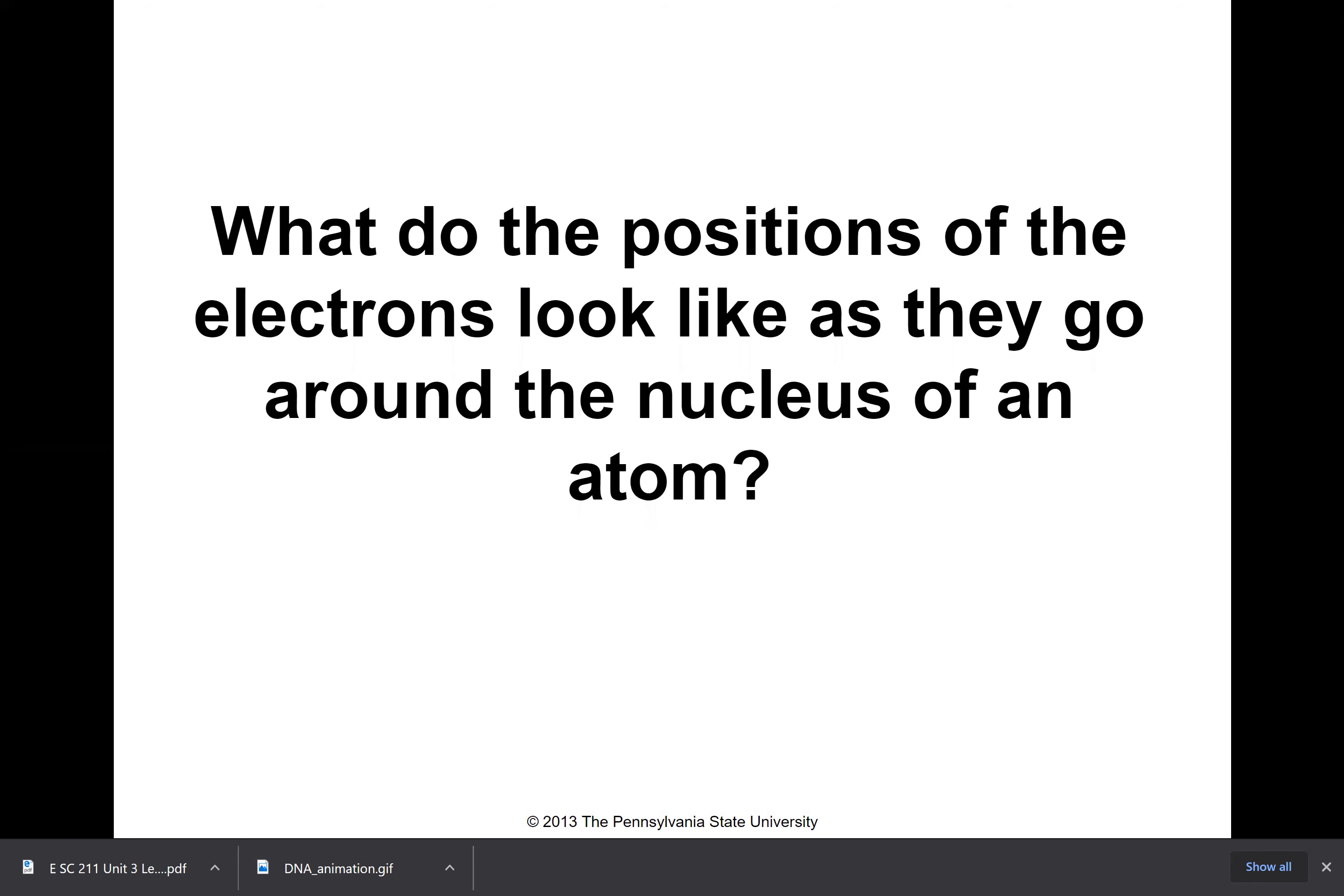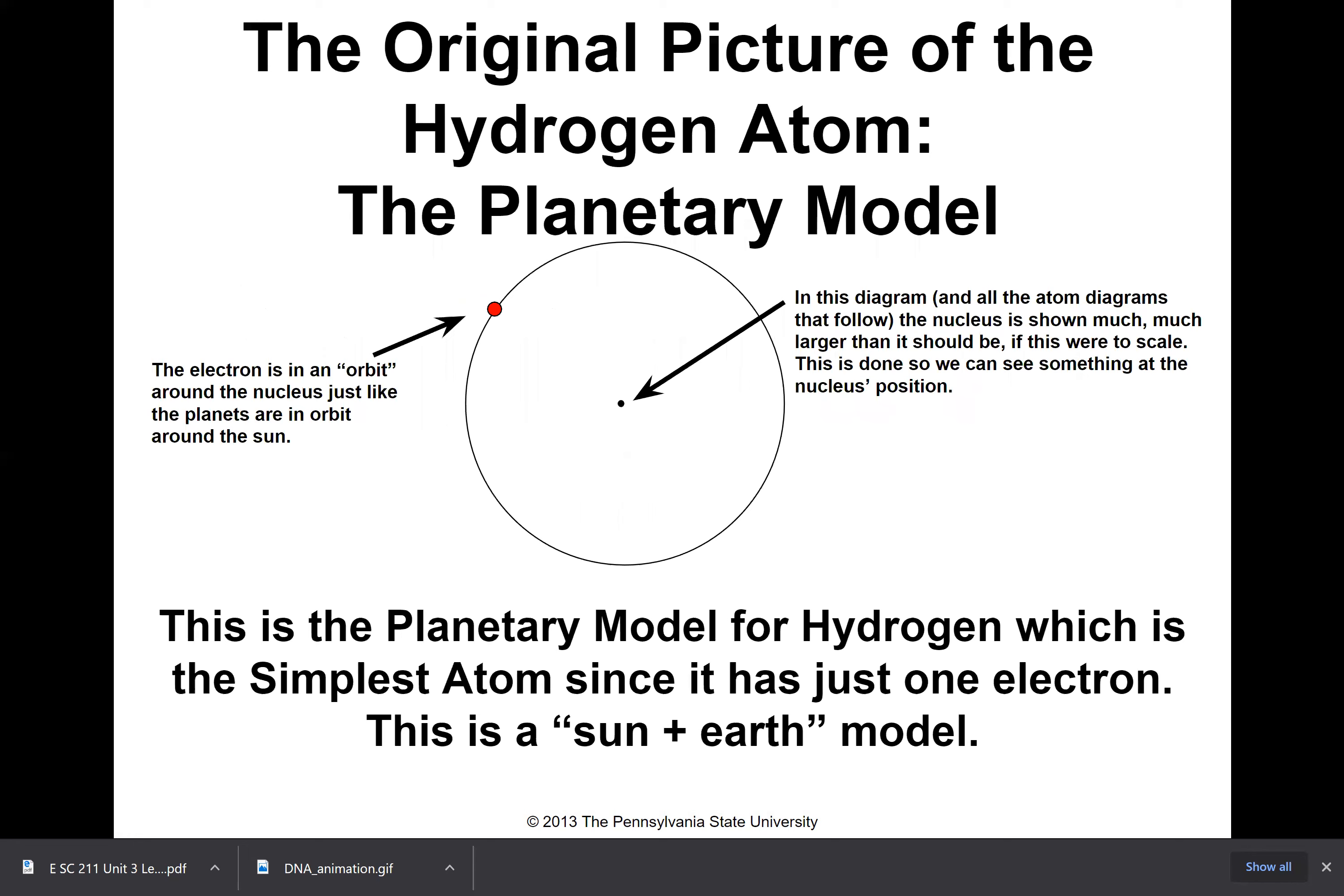What do the positions of the electrons look like as they go around the nucleus of an atom? This slideshow is really focusing a lot on the electrons because the electrons of the atom are really what gives it its chemical, a lot of its chemical and electrical properties. A lot of its properties are based on the electrons, not so much the nucleus, but the electrons around it. So that's why we're focusing on the electrons here.